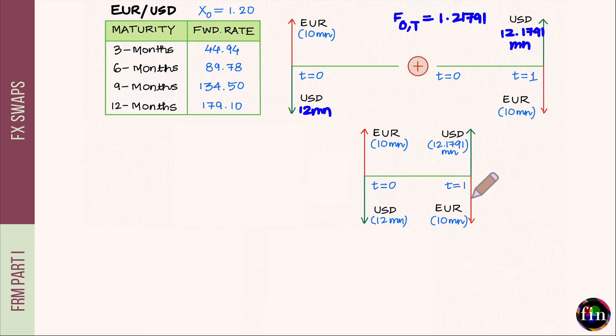Number three: out of these two currencies, euro and USD, we have retained the same amount for the euro. It's 10 million here and 10 million here as well. The amount on the other currency is different: 12 million USD here and a different amount, 12.1791 million USD for this one.